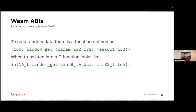Walking through a specific WASI example of reading some random data: the signature says that if running in a WASI environment, I expect a function called random_get that I can use. Translating that into a C function signature — you return an int16 error code, then a buffer and how long that buffer is. In WebAssembly land those are just a couple of integers that get passed around. But for the guest, those are actually pointers into its own memory and how long a buffer within that memory to write the random data into.